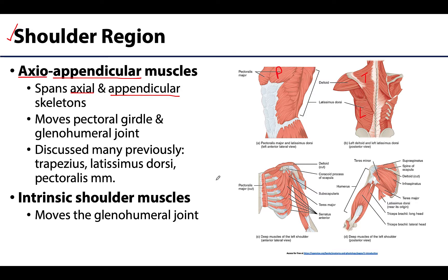There will also be shorter but still very important muscles that proximally and distally attach within the shoulder region and affect the actions of the shoulder joint — typically an attachment on the scapula and then on the humerus. These are referred to as intrinsic shoulder muscles. We'll discuss the specific muscles in upcoming sessions, but these will include the deltoid and, of course, the rotator cuff.